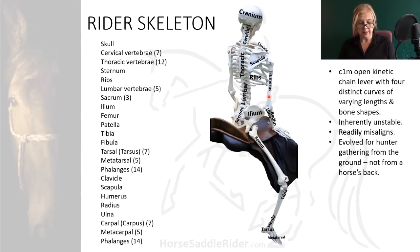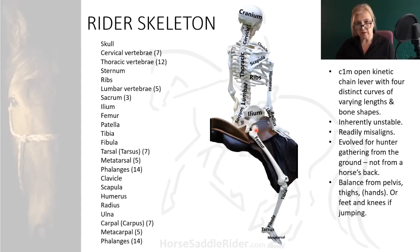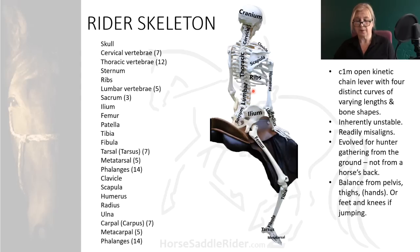We evolved as hunter-gatherers from the ground, not from a horse's back, and rider balance is gained from the thighs and pelvis in the saddle, or if jumping, the feet with the stirrups and the knees. Many novice riders supplement this by using their hands against the reins as an additional balance aid, forming a long lever from the hands to the mouth which can be forceful. The horse needs a rider with greater control and stability over their pelvis, and from that the upper body can be balanced and core muscles fully functioning and engaged.